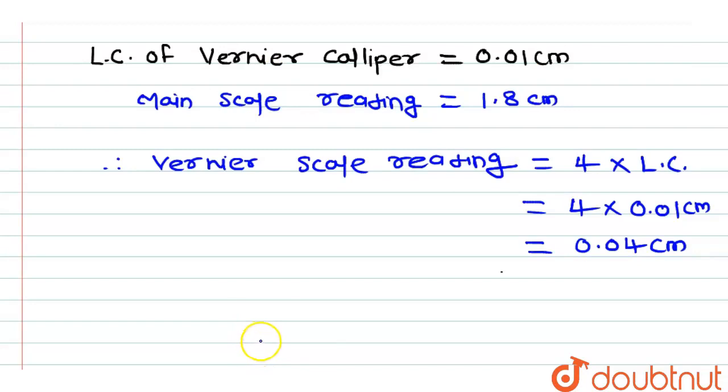Now, total reading will be equal to main scale reading plus Vernier scale reading. Total reading of the Vernier caliper will be equal to MSR (main scale reading) plus VSR (Vernier scale reading).